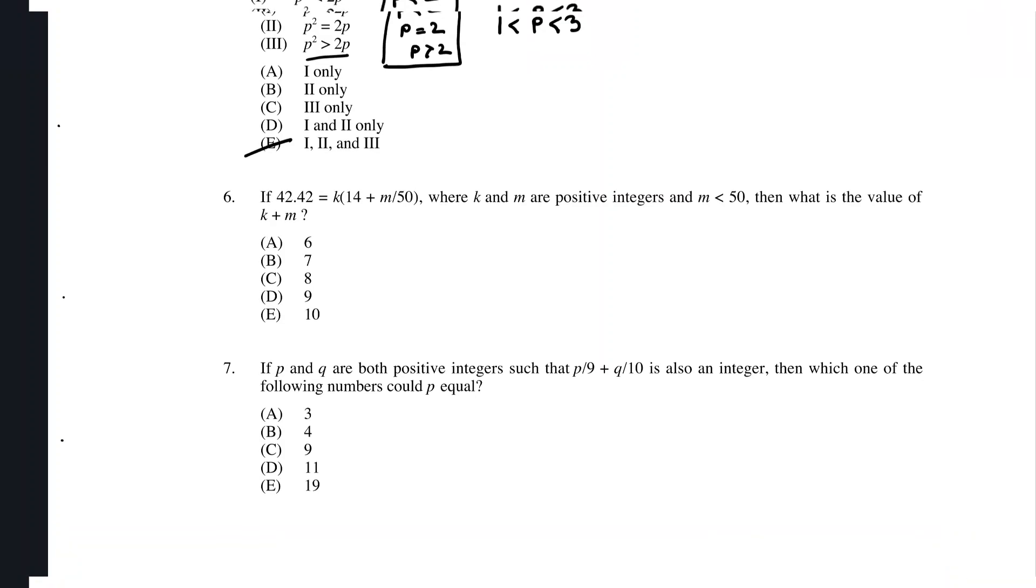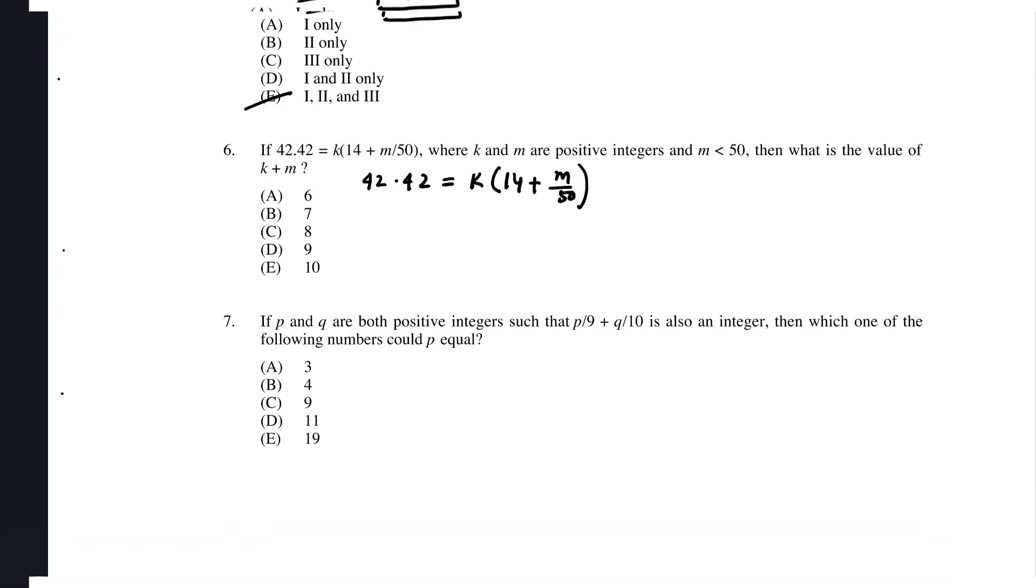In the next problem, we are given that 42.42 equals k multiplied by 14 plus m divided by 15. Now, we have to figure out the value for k and m, and then we have to figure out the value for k plus m. We know that for 14, if we multiply it by 3, it should give me 42. So let's simplify it: 42.42 should equal 3 multiplied by 14 plus m by 15.